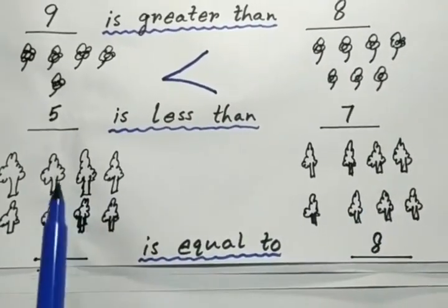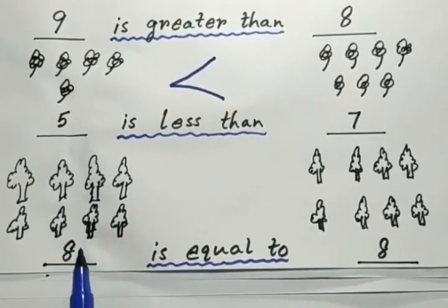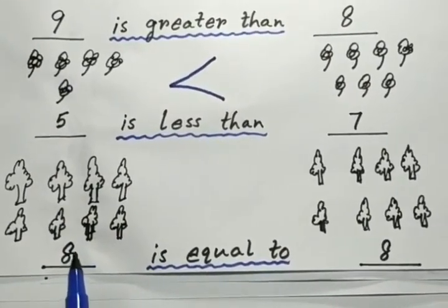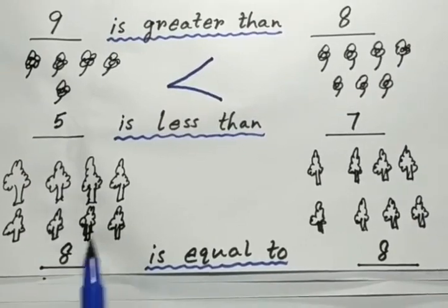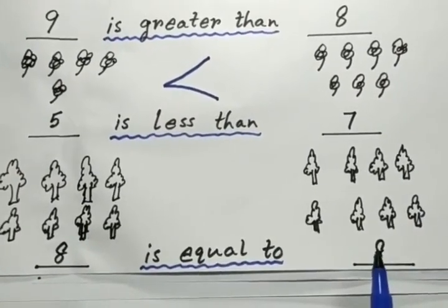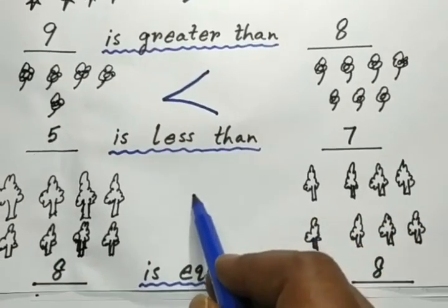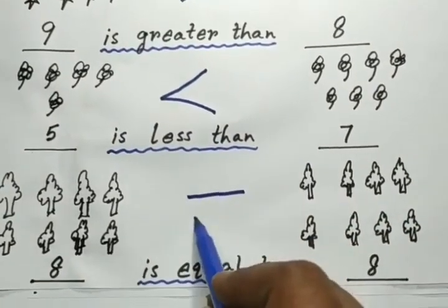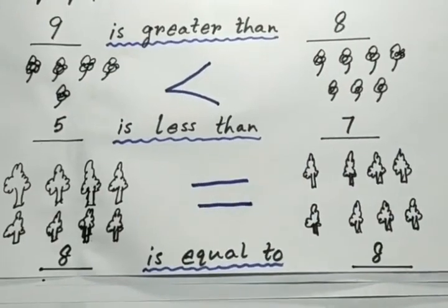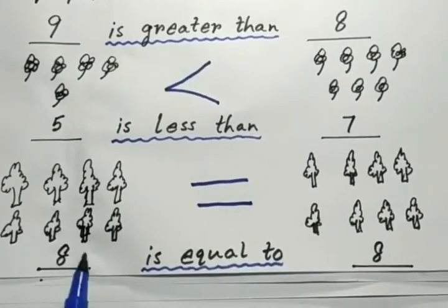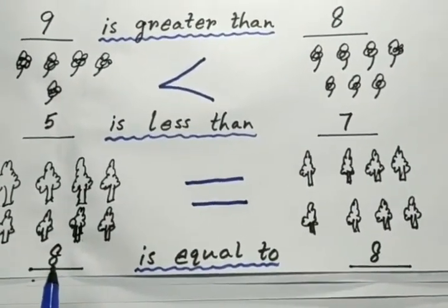Next picture, two groups have same number of trees. Left side we have 8 trees and right side also we have 8 trees. So we are going to use equal sign to compare the numbers.